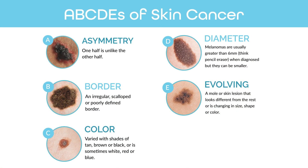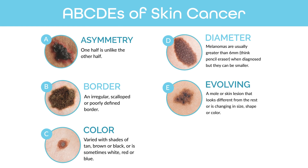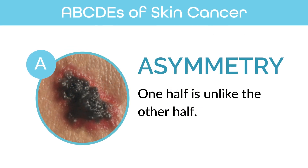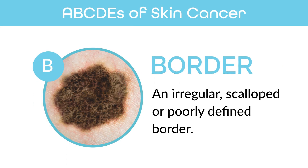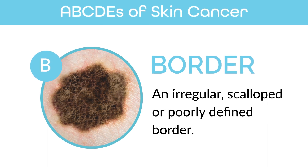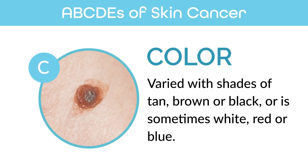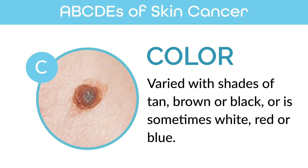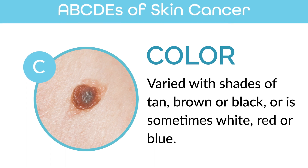For melanoma, there's a nice mnemonic that we call the ABCDEs of melanoma. A stands for asymmetry, meaning the lesion itself will not be symmetrical or a mirror image of each side. B stands for border — if you have a spot that has an irregular border, you may want to come in and see a board-certified dermatologist. C stands for color, which means color change within the mole or color variation, so you can have different hues of brown or black or red or blue.